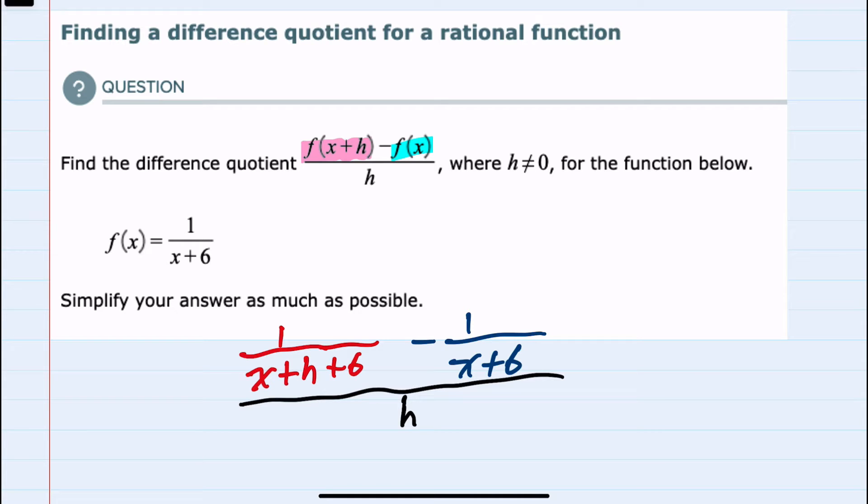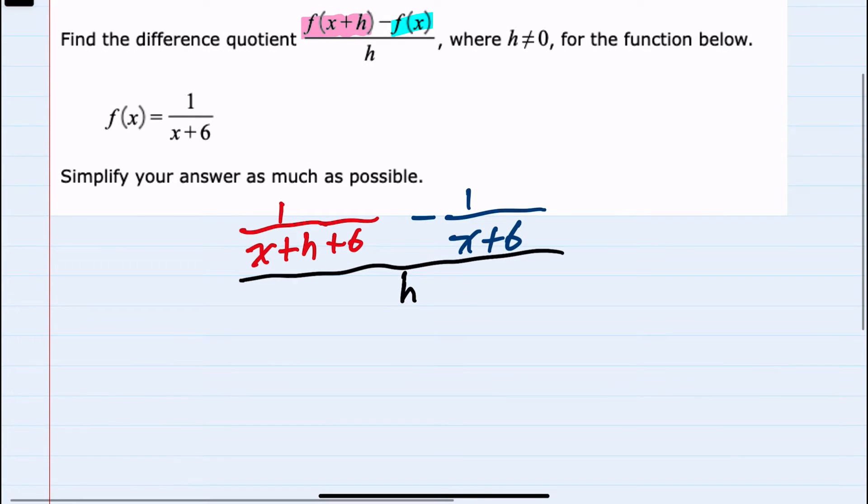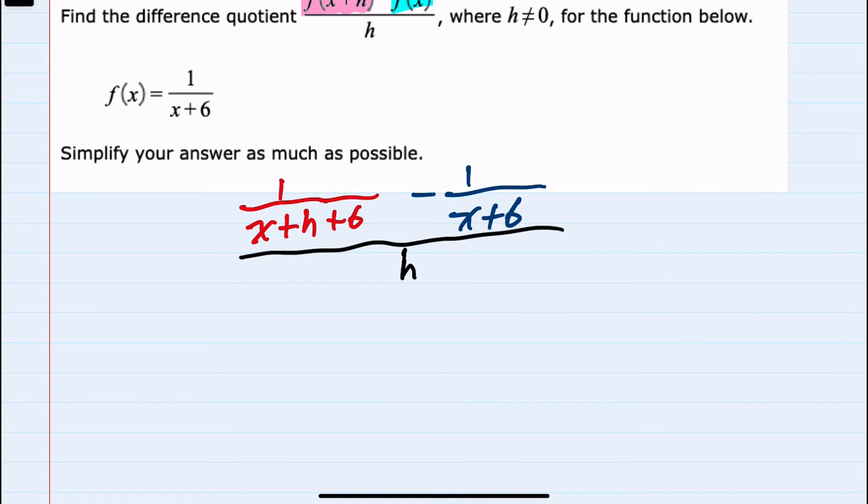Our goal here will be to simplify as much as possible. To simplify, I can start by getting a common denominator in the numerator since we have a complex fraction. Our common denominator will require both the x plus h plus 6 and the x plus 6, so on the left hand fraction I would need another x plus 6, and I can multiply the numerator and the denominator by that x plus 6.